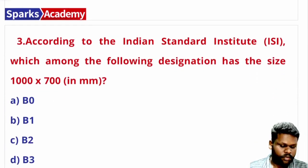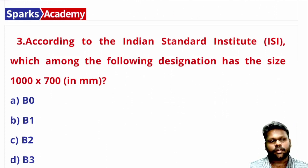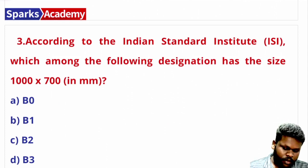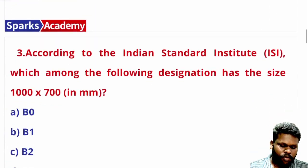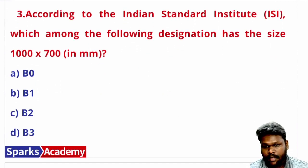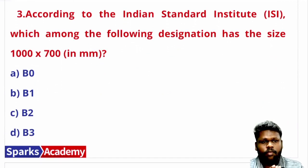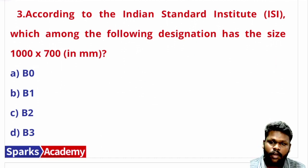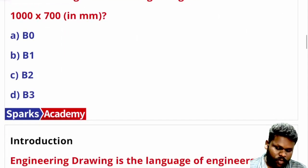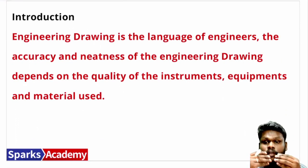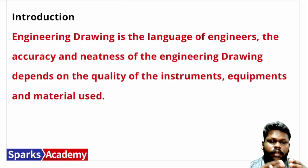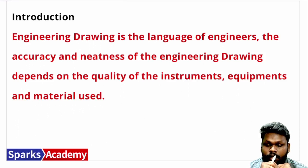According to the Indian Standard Institute, which among the following designations has the size of 1000 into 700mm? Engineering drawings are used in construction - first the plan is prepared, then from the plan the engineering drawings are produced and used correctly.